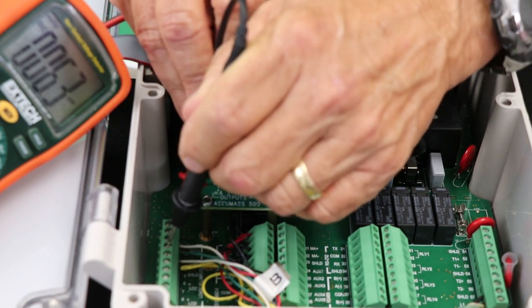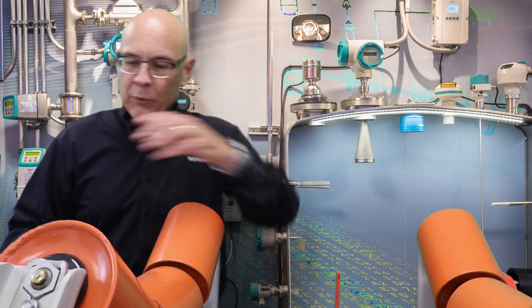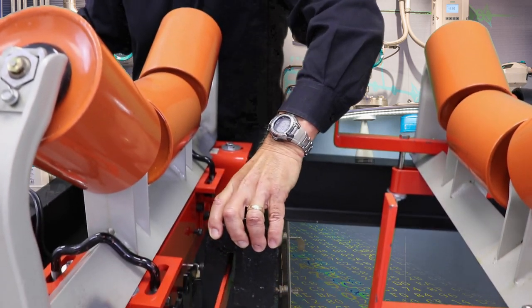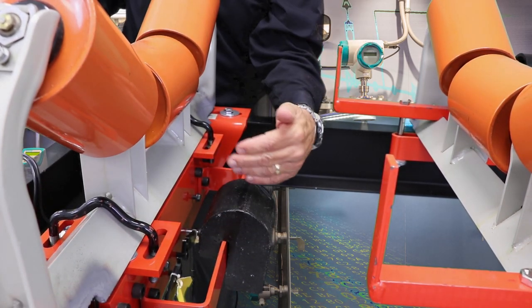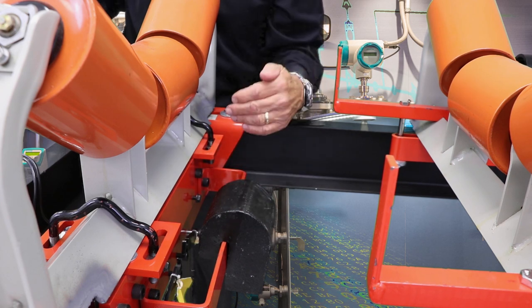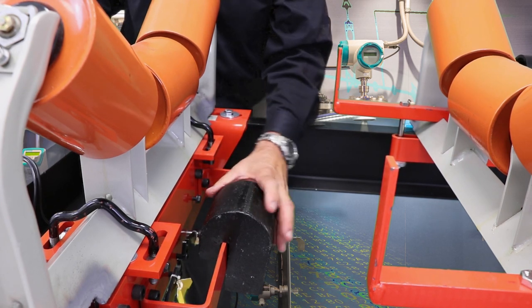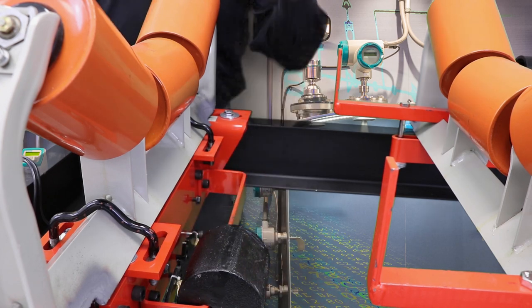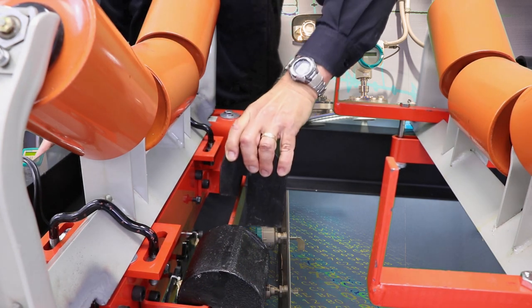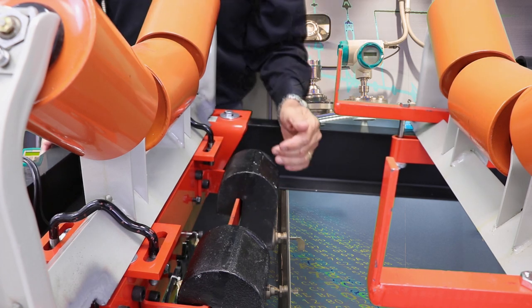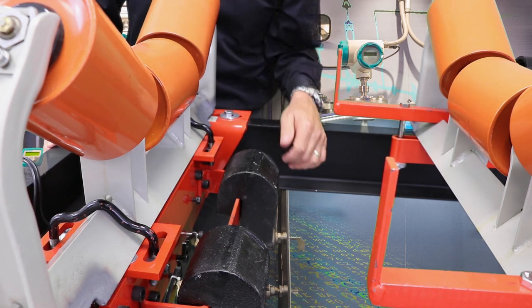It's important on a two load cell weigh bridge to make sure you install an even number of calibration weights. That's the easiest way to ensure that you're loading each load cell with an equal amount. Since I'm going to install two calibration weights, I'm just going to push one calibration weight all the way to one side, the other calibration weight all the way to the other side, and that way I'm positive that I'm going to load each load cell equally.